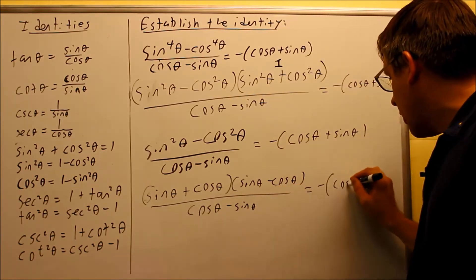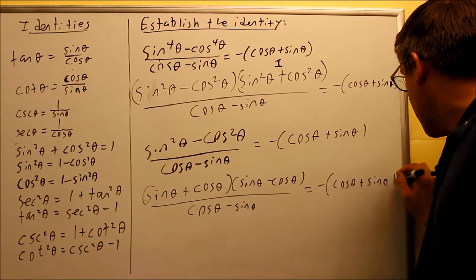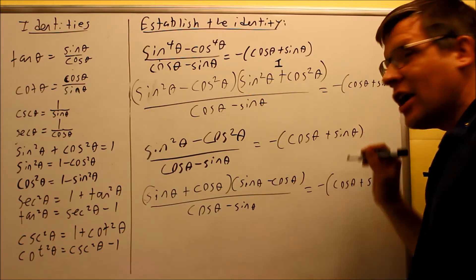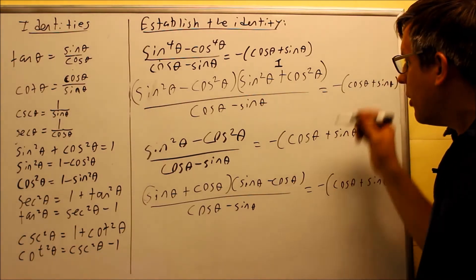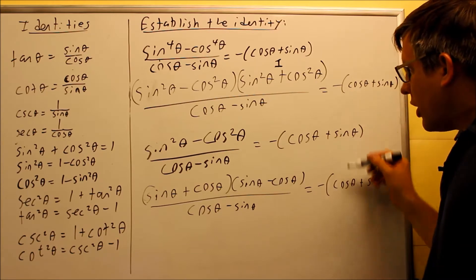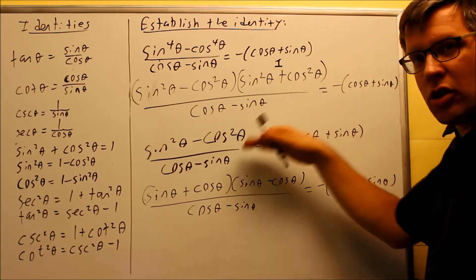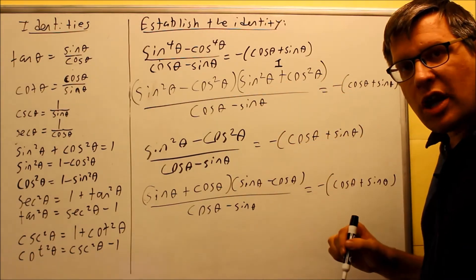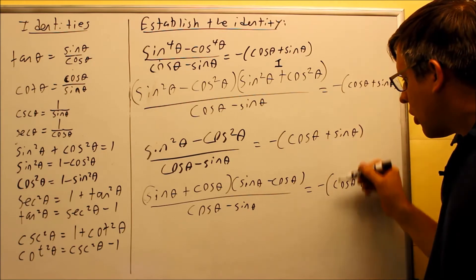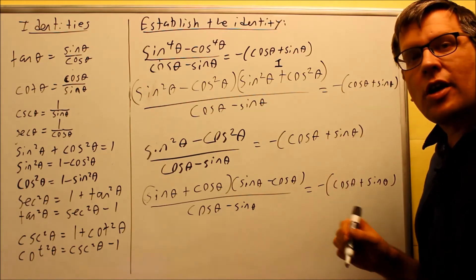On the bottom I have cosine theta minus sine theta. Every single step, what I'm doing is I'm carrying down the right hand side. That's the proper technique. You're writing this down all the way, and each step takes you closer and closer to having both sides equal.